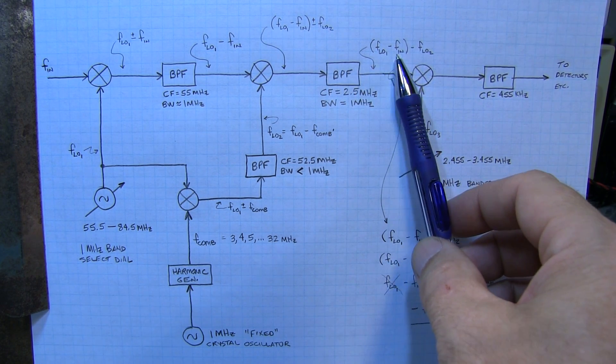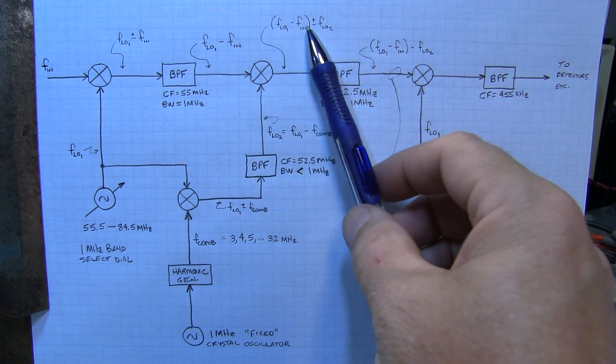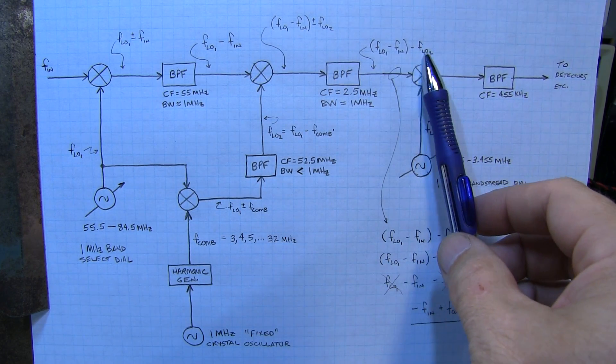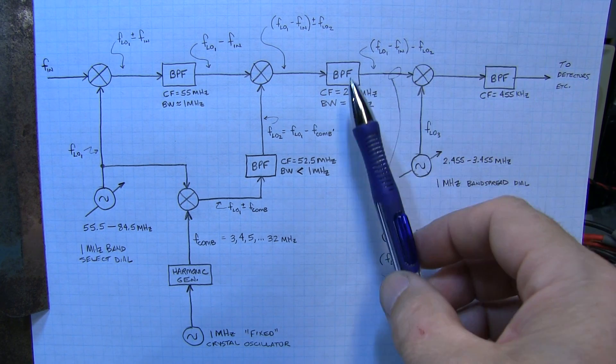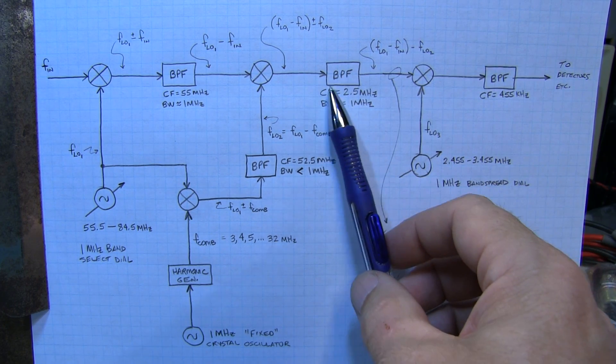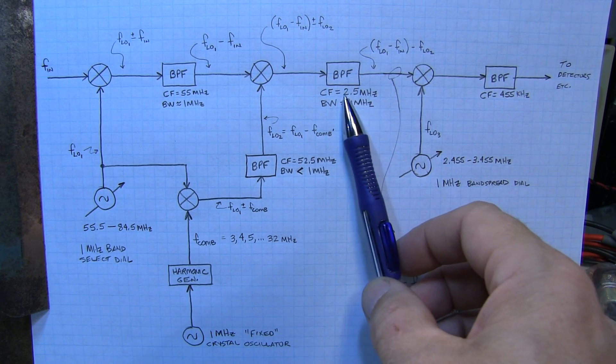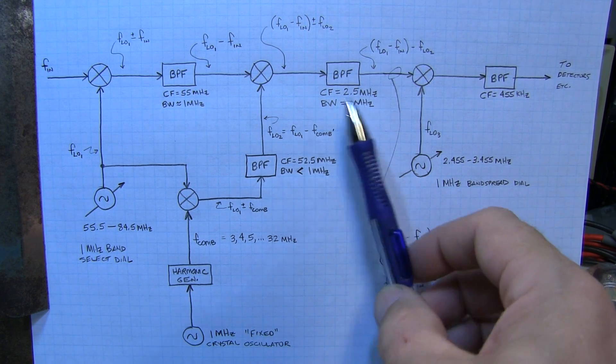Plus or minus FLO2. And again we use a bandpass filter to select just one of those. And what we're going to select is the FLO minus FN, which is essentially our input signal that we're looking for, minus FLO2. That's the signal that appears here. And again in the case of the FRG7 this bandpass filter is centered at 2.5 MHz and a bandwidth of about 1 MHz.